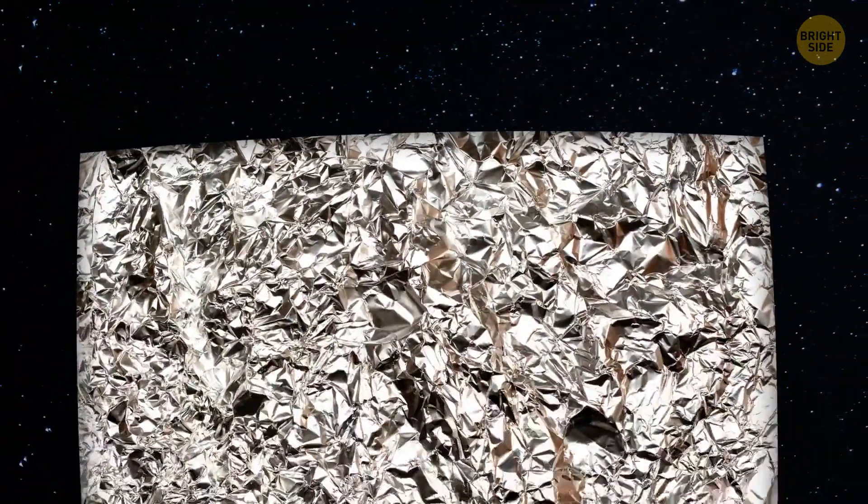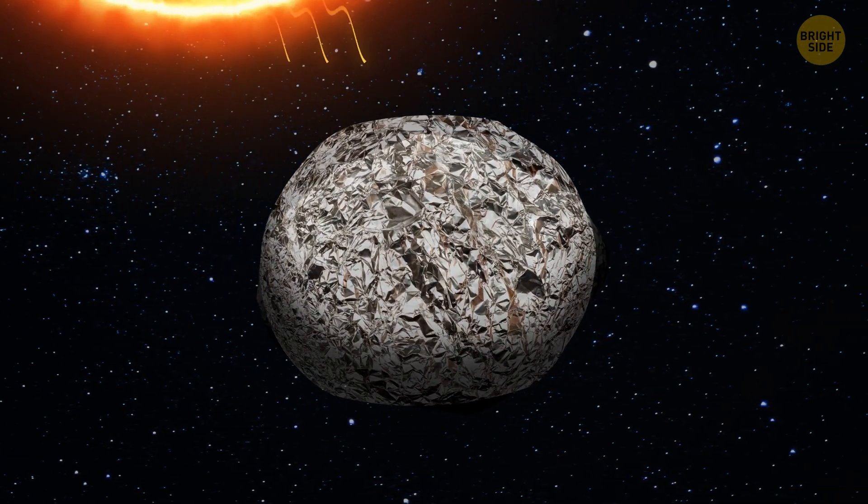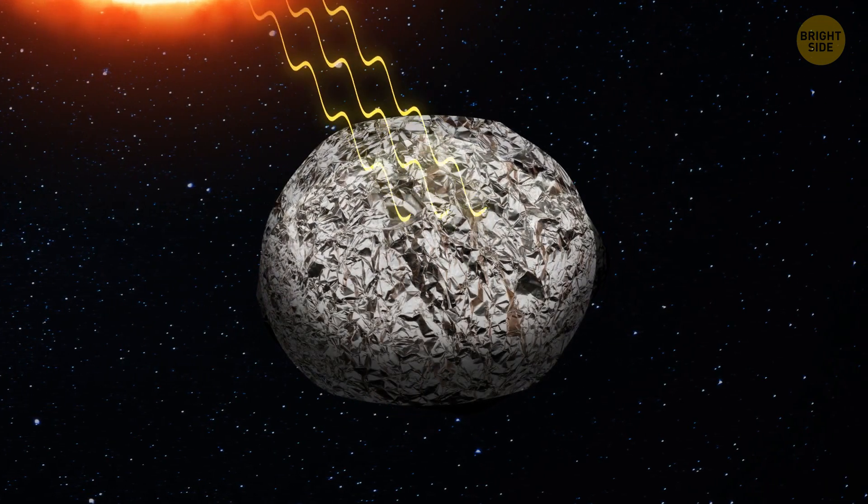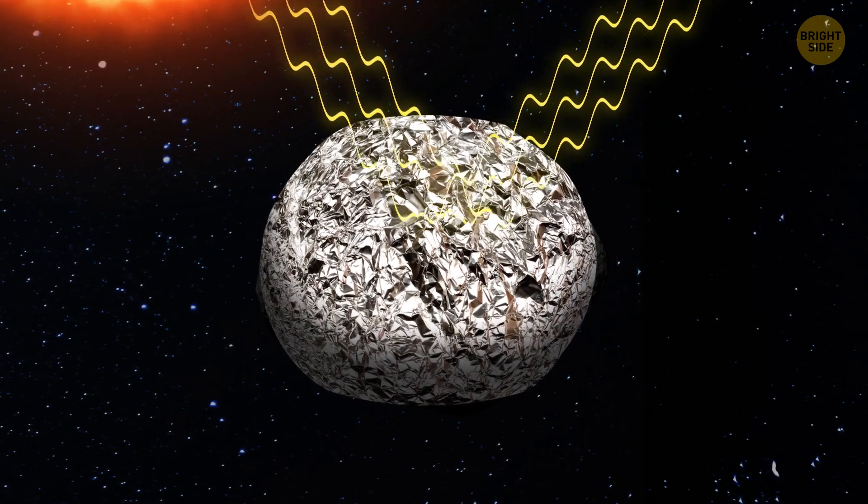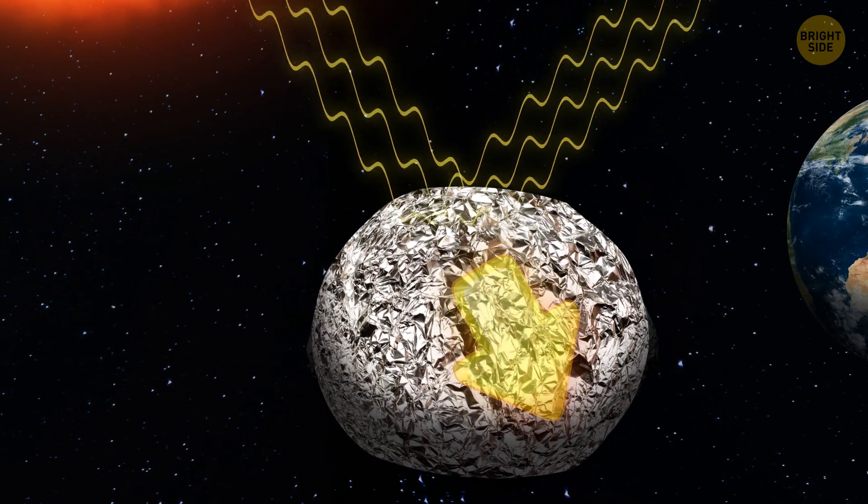We could also wrap the asteroid in a reflective film, something like foil. Usually, space bodies absorb most of the sun's rays, but if the asteroid was covered in foil, the rays would bounce off its surface. This would create a weak pushing force. That should be enough to avoid the collision.